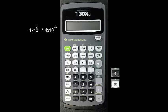Enter 4, EE, then the exponent, which is 2, followed by the sign change button. The display reads 4 times 10 to the negative 2.